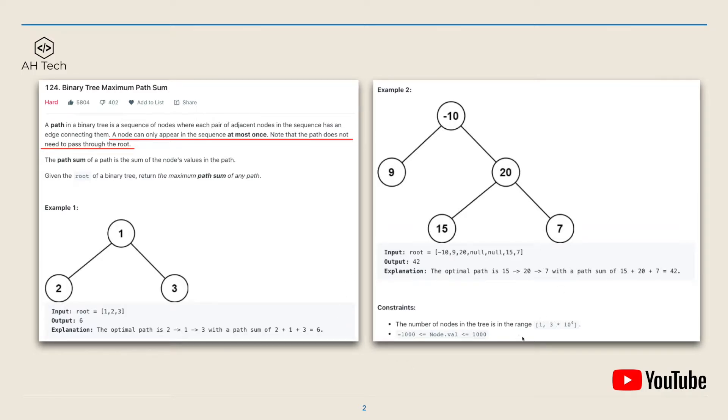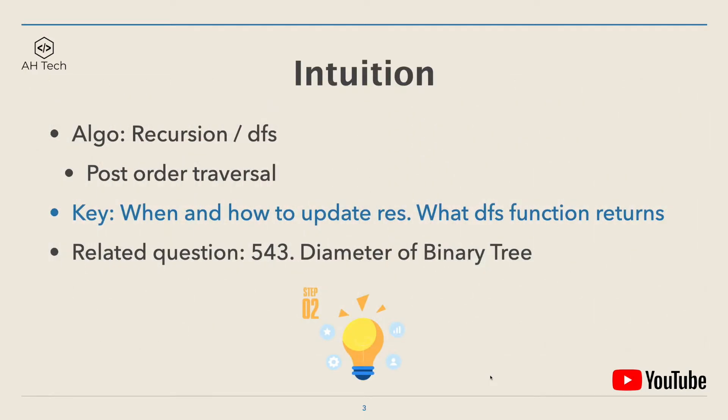And the data constraint: the number of nodes in a tree can go up to 3 times 10 to the power of 4. So we have solved many tree data structure questions so far, so you should be familiar that the first algorithm we should think of when solving tree problems is recursion or DFS. And for this question we have to perform a post-order traversal, which is traverse into left and right subtree first and then update result. And the tricky part of this question is when and how to update the final output result and what the DFS function should return.